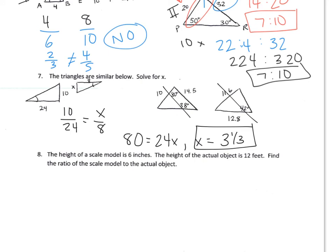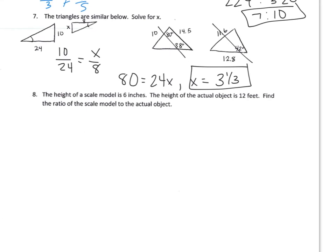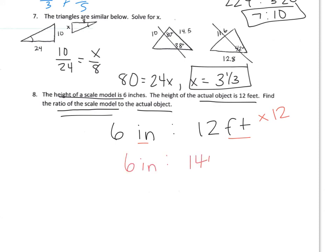And then the last one, the height of a scale model is 6 inches. The height of the actual object is 12 feet. Find the ratio of the scale model to the actual object. So I'm going to write the scale model first, because that's what tells me the directions, 6 inches. This one's 12 feet. In order to write this ratio, I need to make sure the units are the same. So I'm going to multiply this by 12, because that's going to give me inches. So it's 6 inches is to 144 inches. And then I'm going to reduce both of them, because I can divide both of them by 6. So it's 1 to 24 is the ratio.